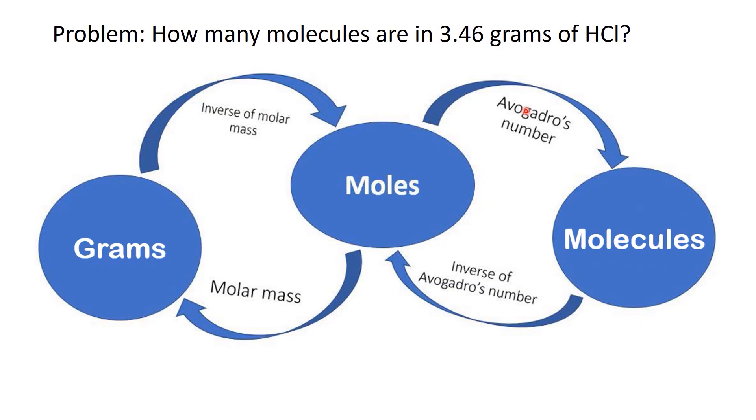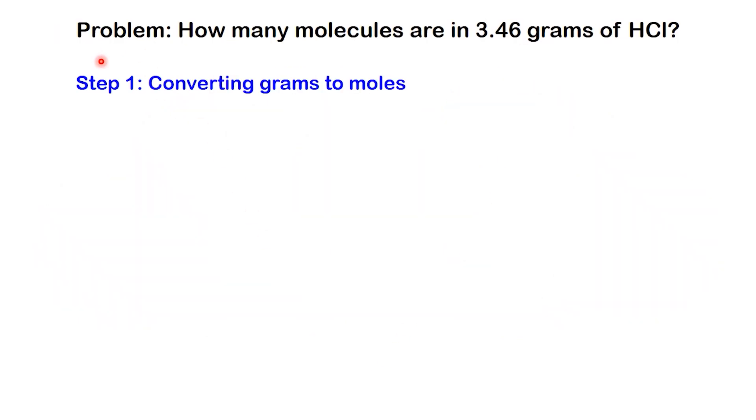Let's take it one step at a time. Let's start with Step 1: Converting grams to moles. We're told we have 3.46 grams of HCl. To convert this to moles, we need a conversion factor, something that links grams and moles. That conversion factor is the molar mass of HCl.